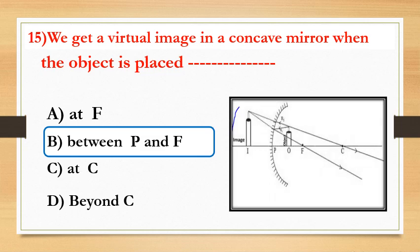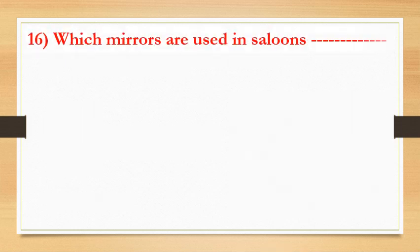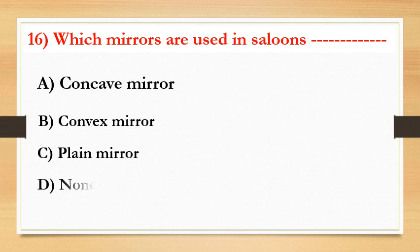Which mirrors are used in saloons? Options are: concave mirror, convex mirror, plane mirror, or none of the above. The answer is plane mirror.